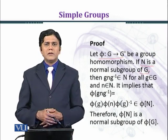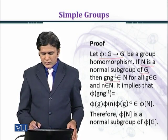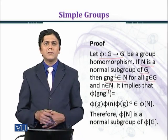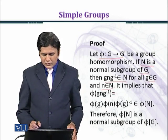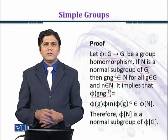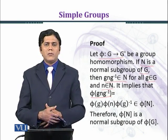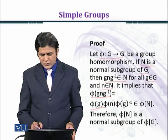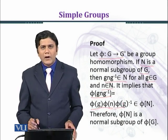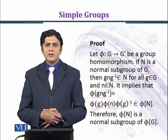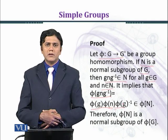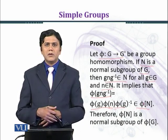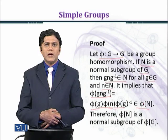By definition, g n g inverse belongs to N for all g belonging to G and n belonging to N. It implies that phi(g n g inverse), and by using the homomorphism property, we obtain phi(g) into phi(n) into phi(g) inverse, which equals phi(g inverse), which is the inverse of phi(g). And this also belongs to phi(N) because phi(N) contains all the images.